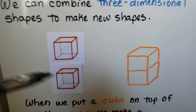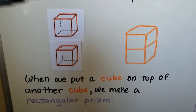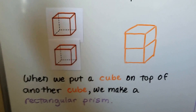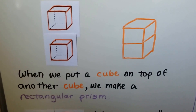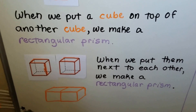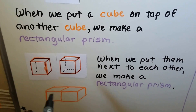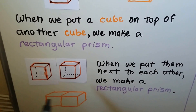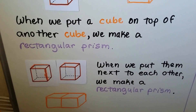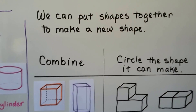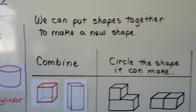We put a cube on top of another cube and we make a rectangular prism. See, when we put them next to each other we still make a rectangular prism — it's just side by side.